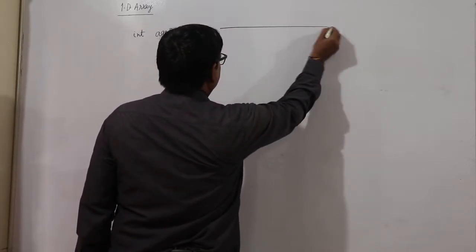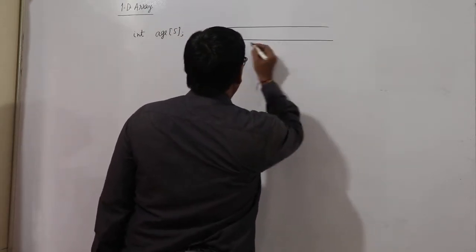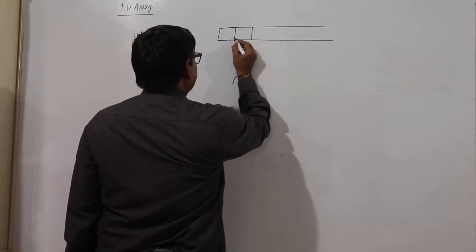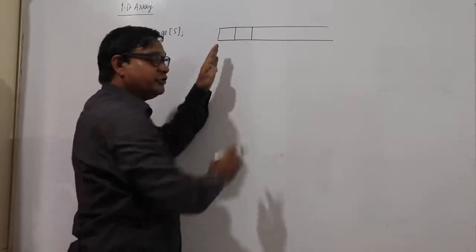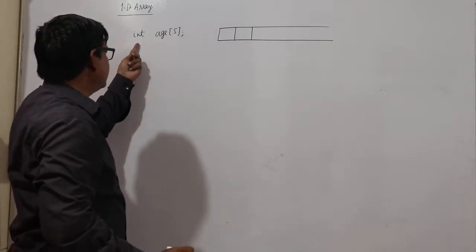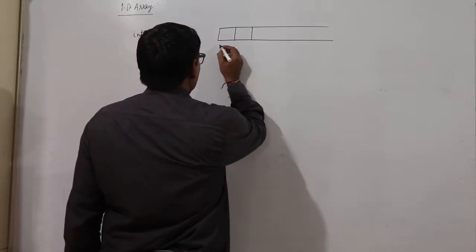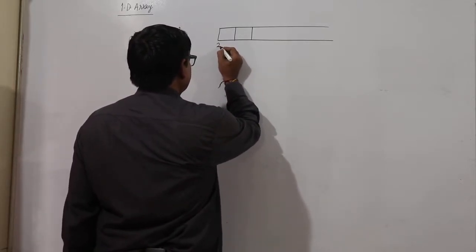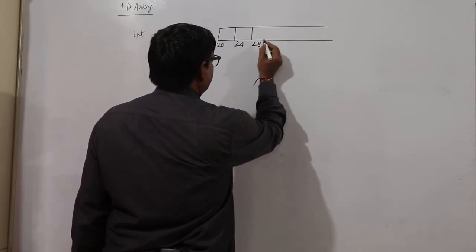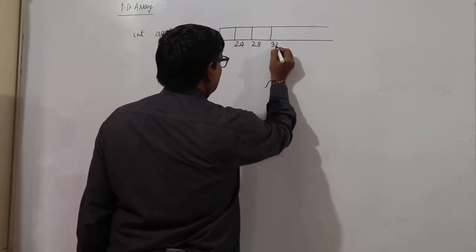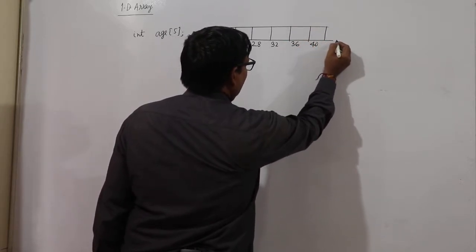Then this age will be stored in memory. I am taking each location, each block, each block of 4 bytes because int takes 4 bytes in GCC. If the address starts with 20, next address will be 24, next 28, next 32, 36, then 40 and so on.